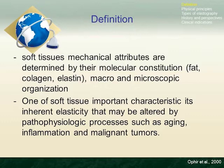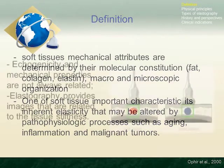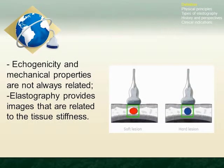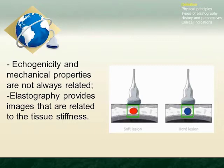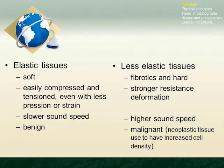Echogenicity and mechanical properties are not always related. To address this, a new technique was developed that provides images related to tissue stiffness. Elasticity describes the ability of a tissue to regain its original shape and size following application of stress. In general, elastic tissues are soft, have slower sound speed, are easily compressed and tensioned even with less pressure or strain.